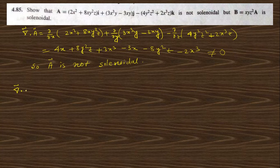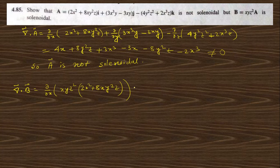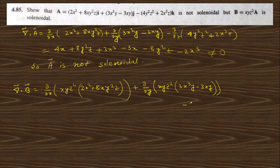For vector B, the divergence of B involves multiplying each component by the scalar xyz². So divergence of B = ∂/∂x of [xyz²(2x² + 8xy²z)] + ∂/∂y of [xyz²(3x³y − 3xy)] − ∂/∂z of [xyz²(4y²z² + 2x³z)].